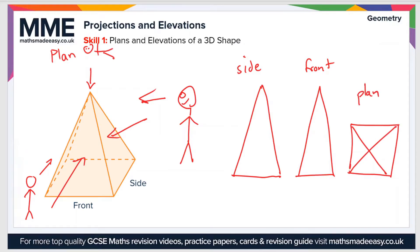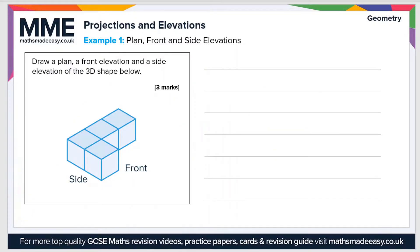Let's take a look at an example question: draw a plan, a front elevation, and a side elevation of the 3D shape below. First, let's draw the plan elevation. The plan is when you're looking directly down from above, so if you were floating in the air looking down at the shape, what you would see is an L-shape that is three squares tall and two squares wide.